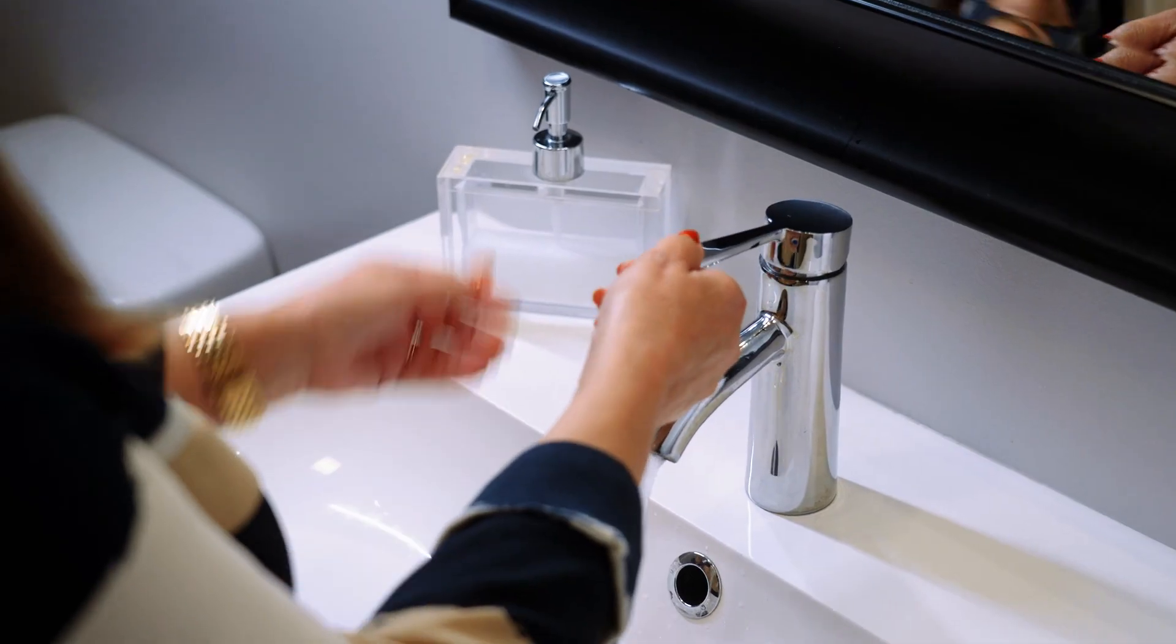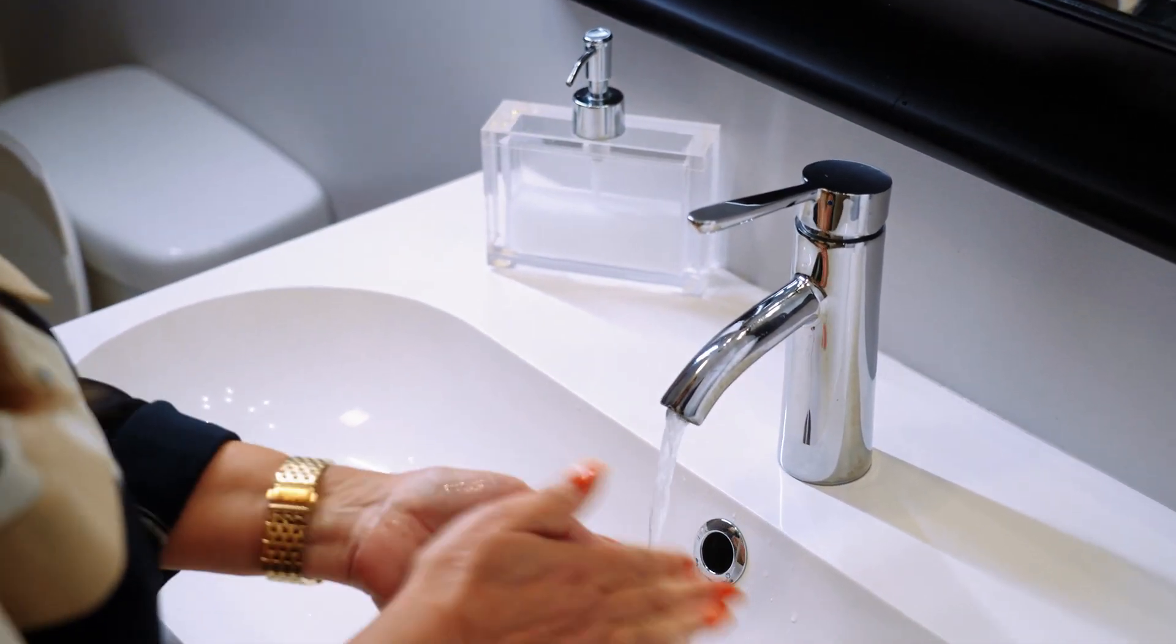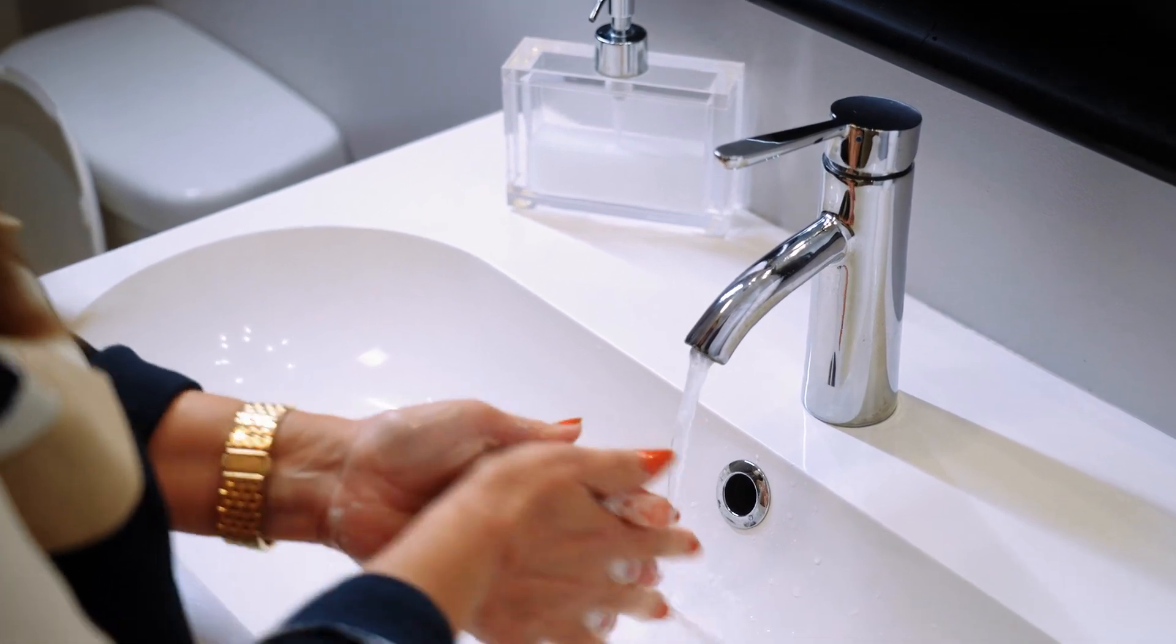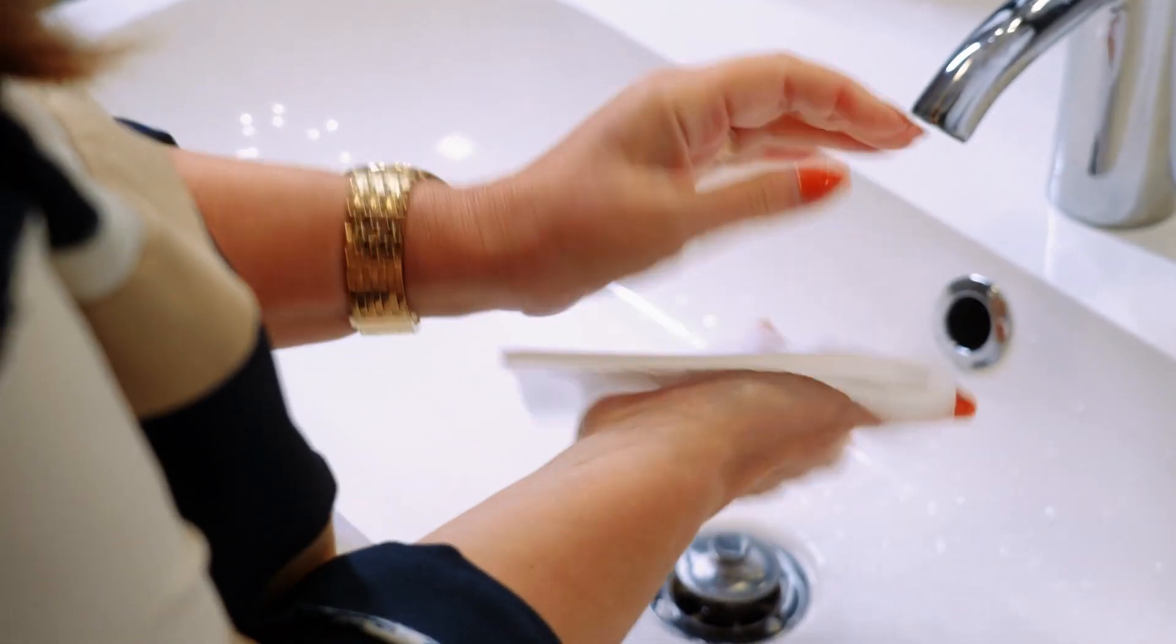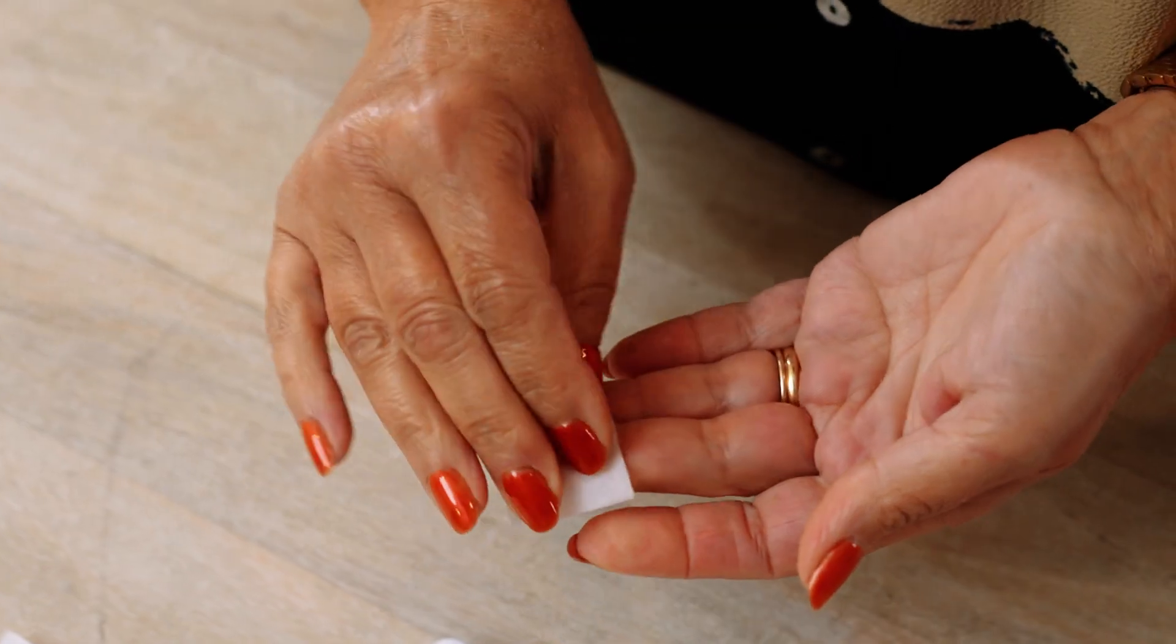To ensure a reliable sample collection, start by washing your hands with warm water for at least two minutes to stimulate blood flow. Afterward, clean your middle or ring finger with an alcohol swab.